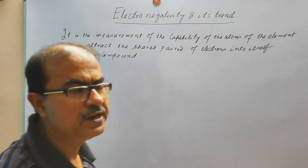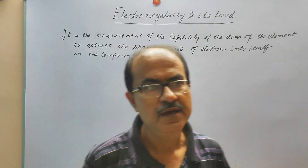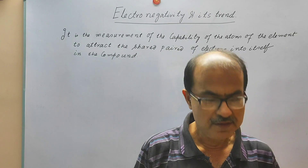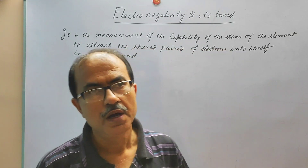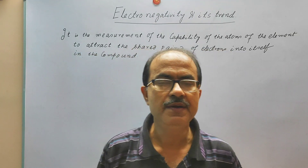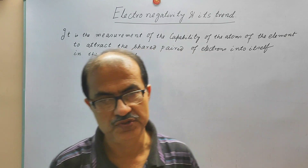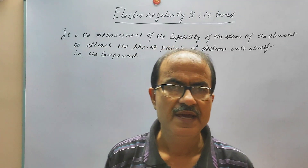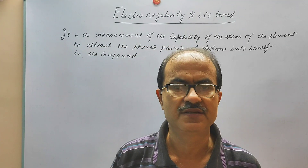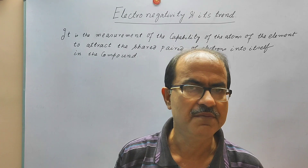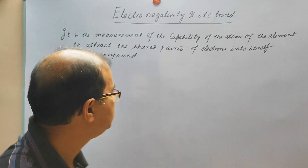So electronegativity is basically measured in compounds when the elements have formed any compounds. Electronegativity is not fixed for an element — that can be understood from this example.